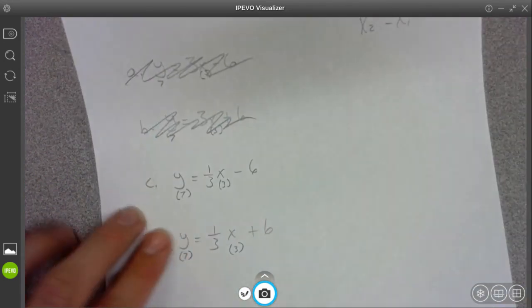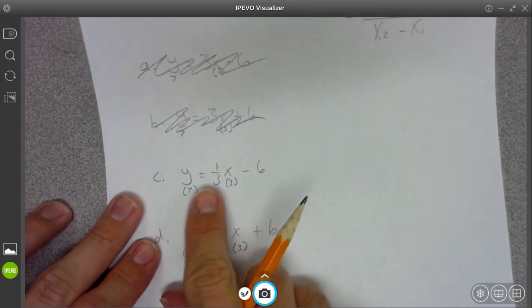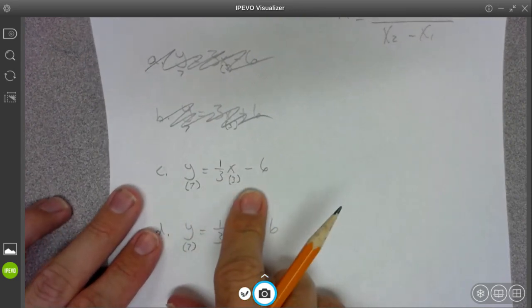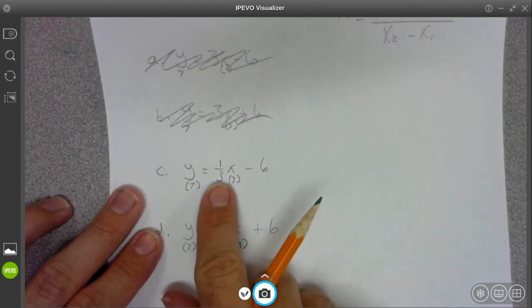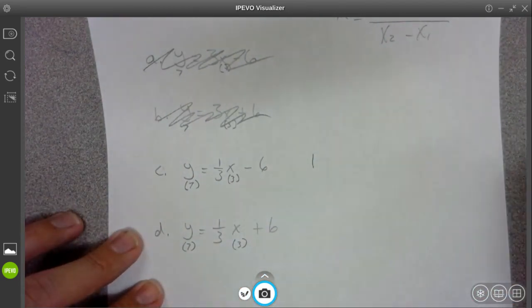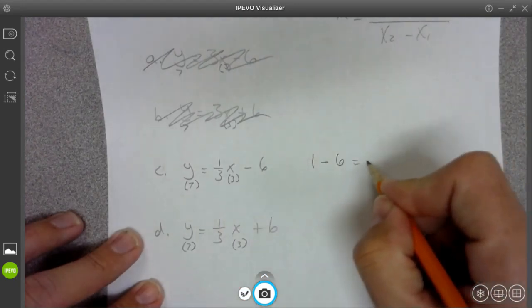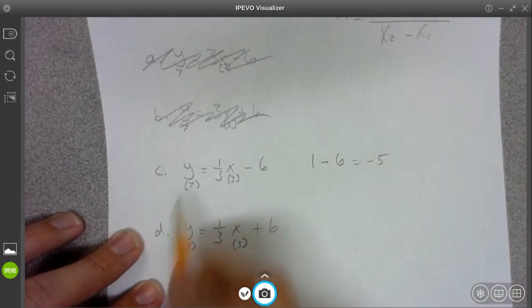It's taking forever. And now here's where we've got some fractions. So one third times three. Well, one third of three is equal to one. And so you get one minus six, which is negative five, not seven.